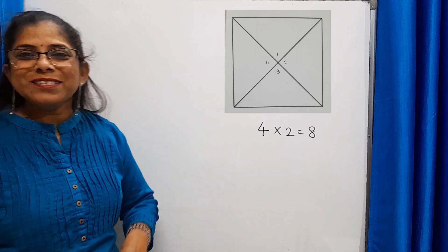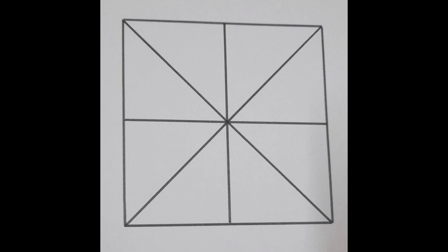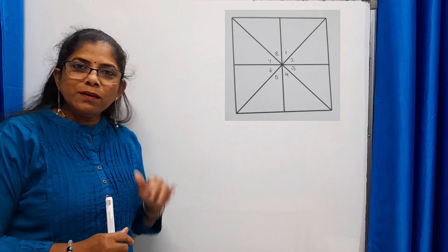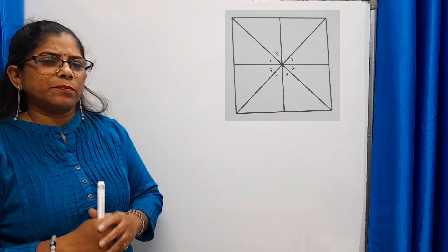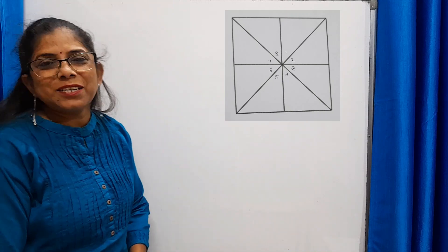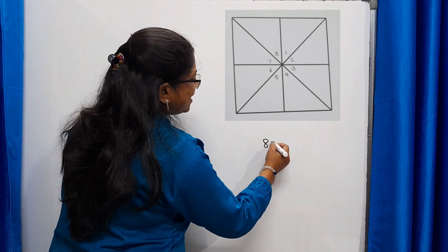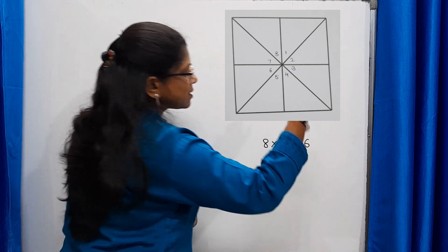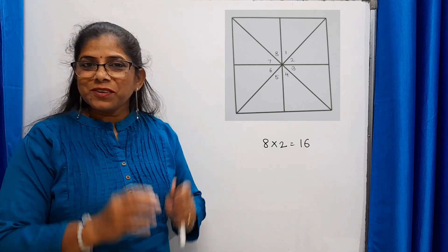Now let's move to one more interesting sum. Just observe this figure carefully and find how many triangles are there. Check how many parts are formed at the center and number them: one, two, three, four, five, six, seven, eight — eight parts are formed. The total number of triangles: eight into two equals sixteen triangles formed in this figure.